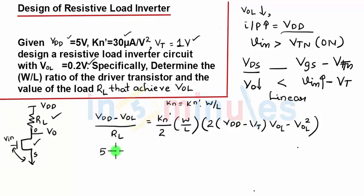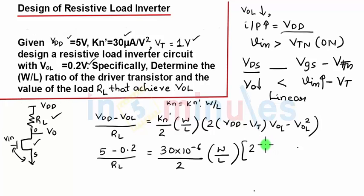Let's substitute the values. VDD is given as 5 volts, VOL is given as 0.2 volts, RL is what we are going to find, KN dash is given as 30 microamperes, W by L is something what we are going to find. Twice into 5 minus 1, VDD is 5 and threshold voltage is 1, that is 4. VOL is 0.4, VOL is 0.2 minus 0.2 the whole square. If you rewrite the equation by solving the mathematics, you get W by L into RL equal to 2.05 into 10 raised to 5 ohms.